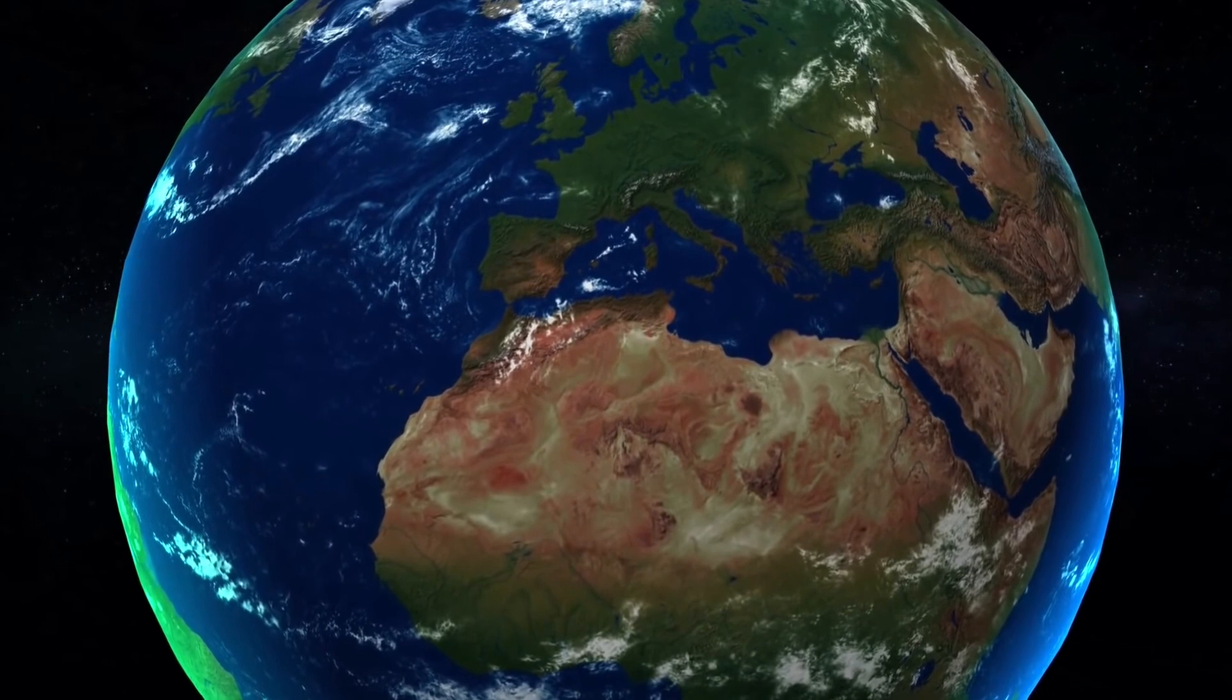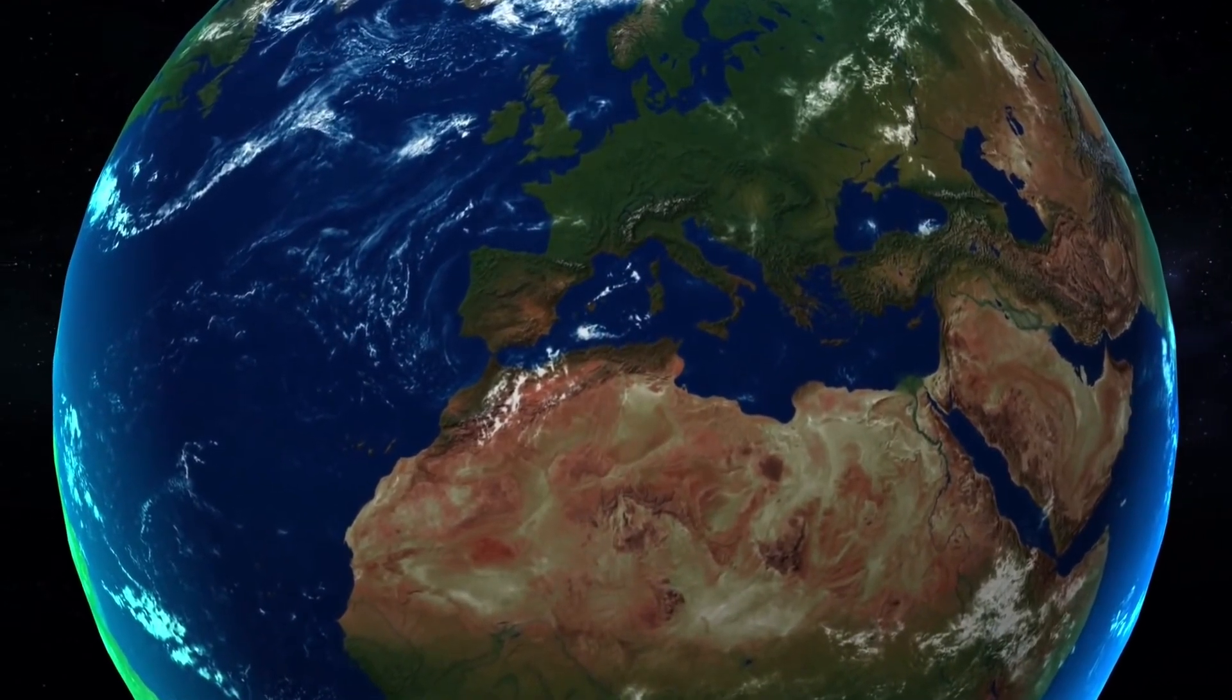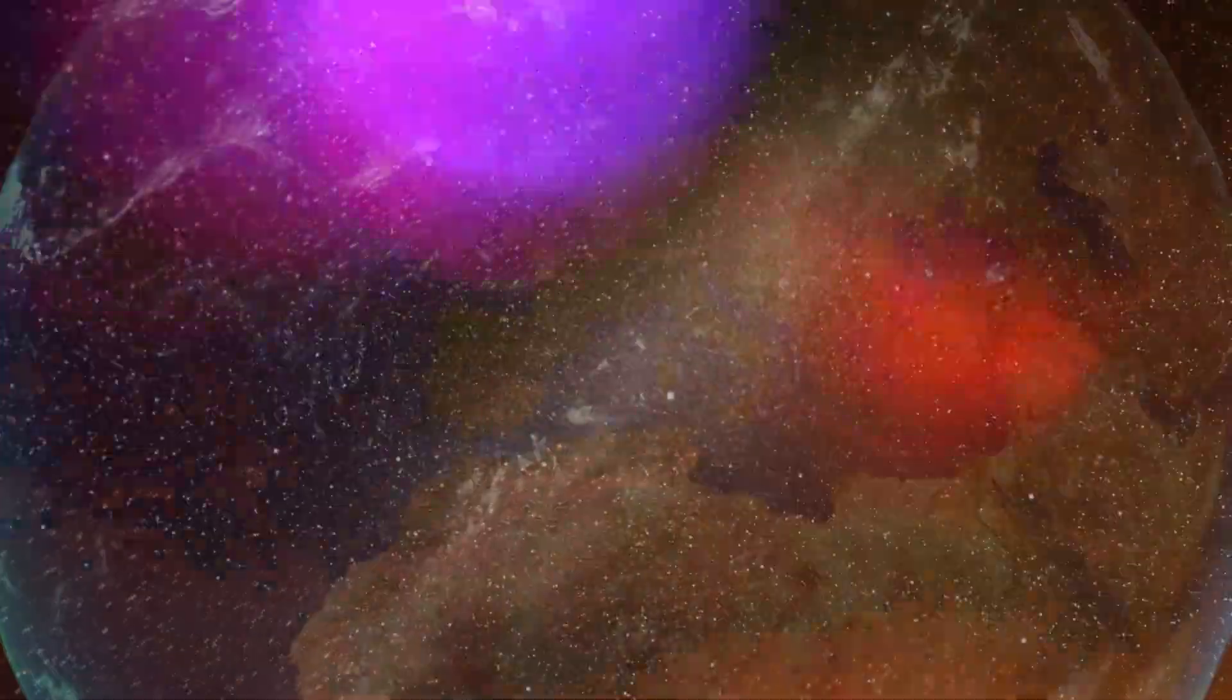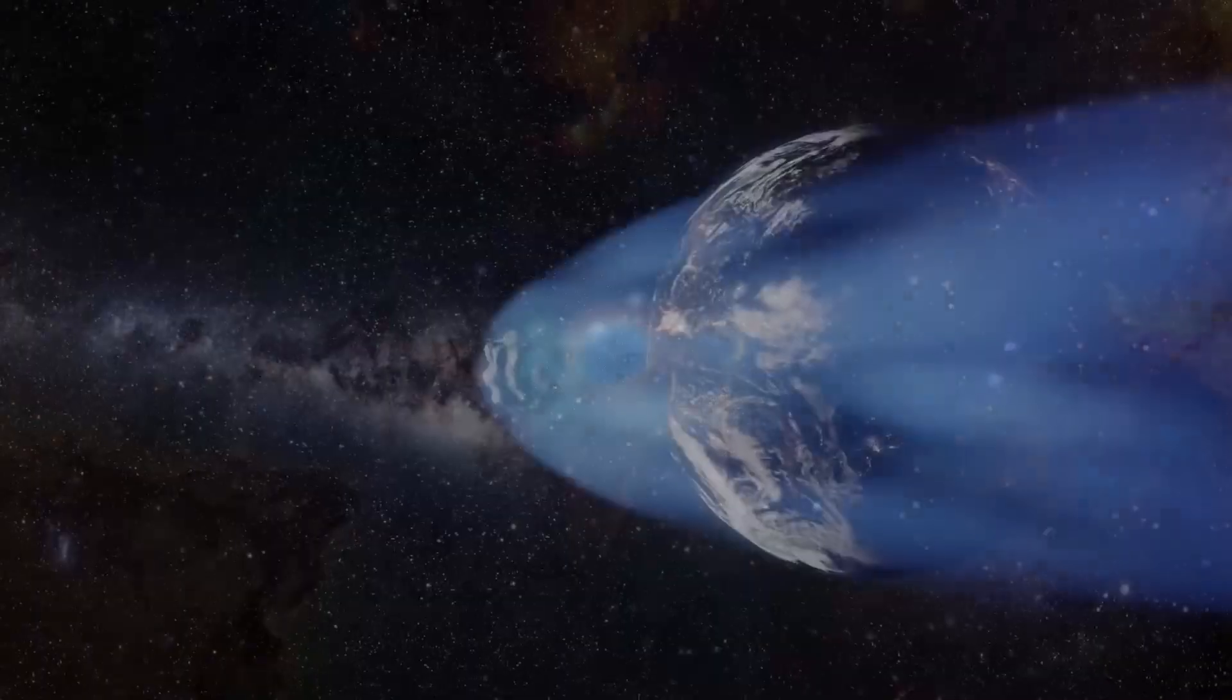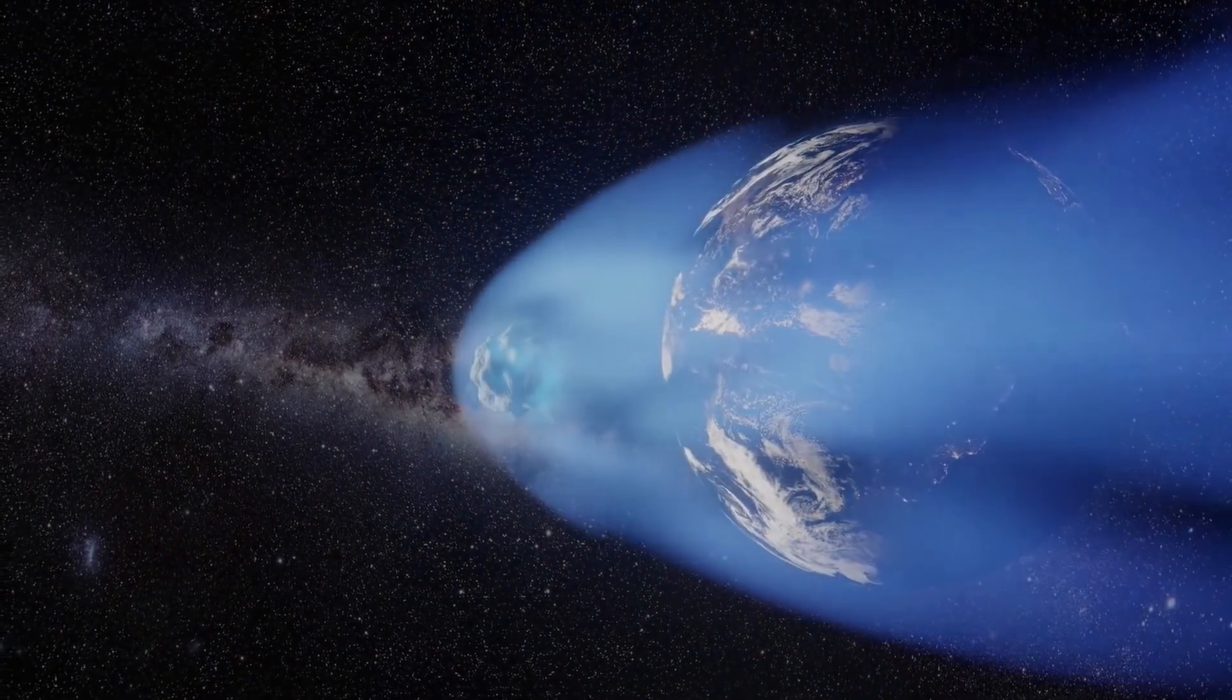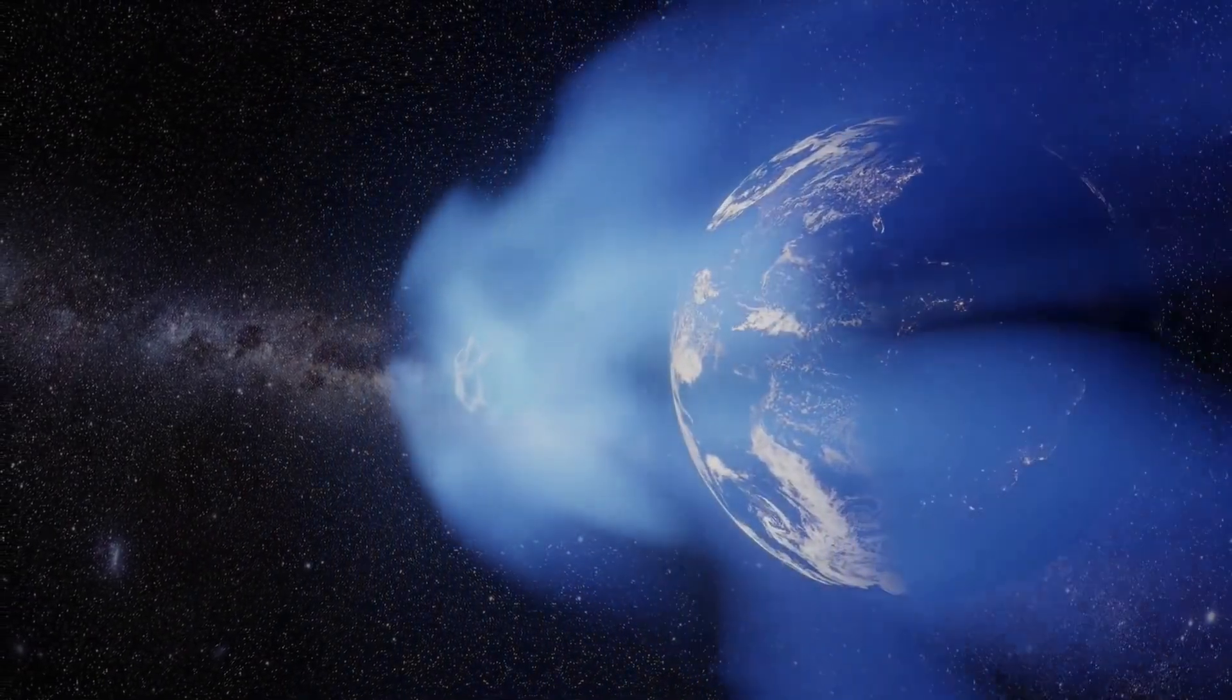If a particularly active magnetar found its way into the solar system, it would be so powerful that organic life on Earth, including the ozone layer, would not have time to react to its presence. If the magnetar, which is a neutron star with an extremely powerful magnetic field, were to pass close to Earth, it would cause unimaginable destruction.